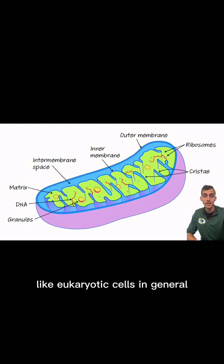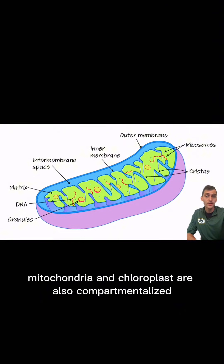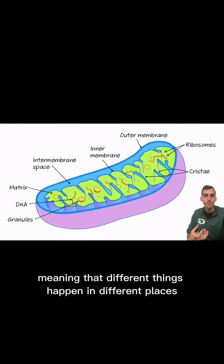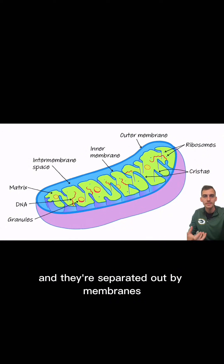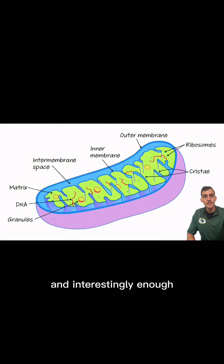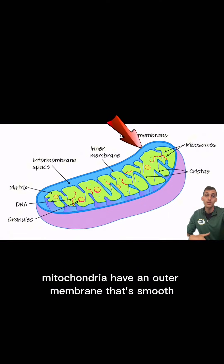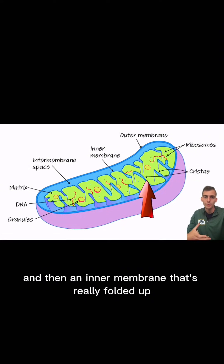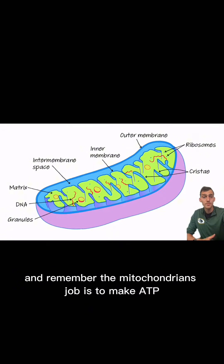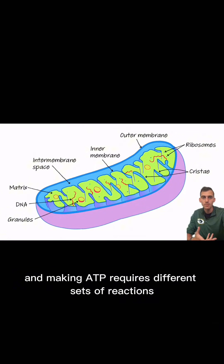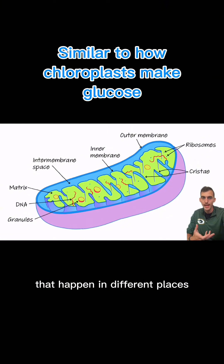Like eukaryotic cells in general, mitochondria and chloroplasts are also compartmentalized, meaning that different things happen in different places and they're separated out by membranes. Interestingly, mitochondria and chloroplasts have two membranes. Mitochondria have an outer membrane that's smooth and an inner membrane that's really folded up. The mitochondrion's job is to make ATP, and making ATP requires different sets of reactions that happen in different places inside the mitochondrion.